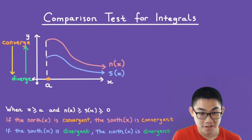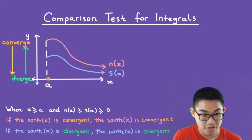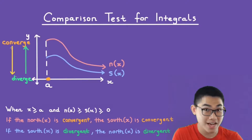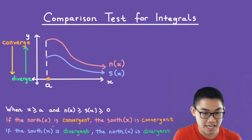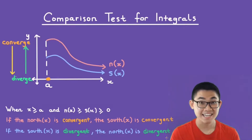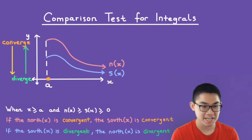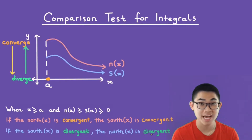First, if the north function is convergent, then any function below that will be convergent as well. So as you can see, the arrow points downwards. Basically, if the north function is convergent, then the south function is convergent as well. The second thing we know is that when the south function is divergent, then any function above that is also divergent. Basically, if the south function is divergent, then the north function is also divergent.